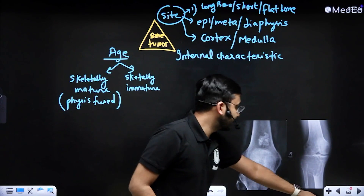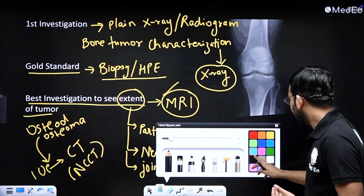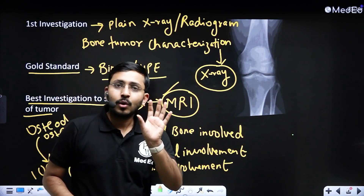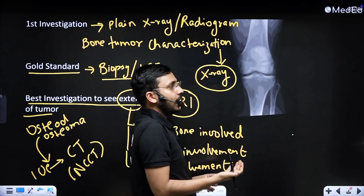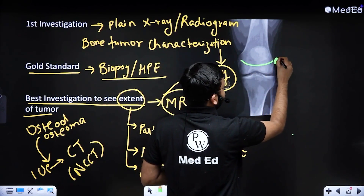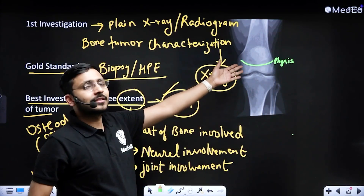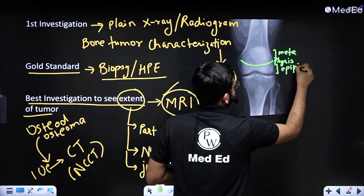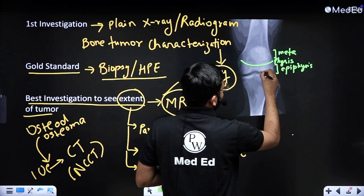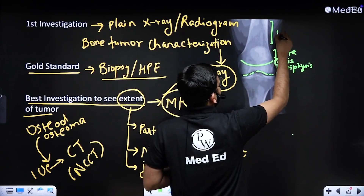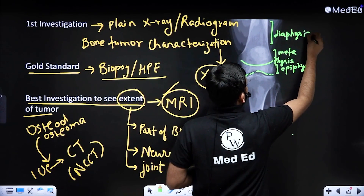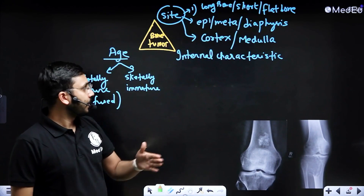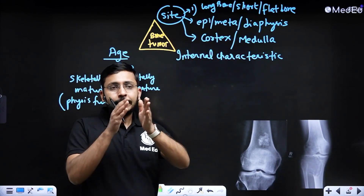Let's quickly recapitulate epiphysis, metaphysis, and diaphysis. These concepts apply to long bones like the femur, tibia, or fibula. In a skeletally mature patient with a closed physis: just above the physis is the metaphysis, just below the physis is the epiphysis — which is in contact with the joint capsule — and the shaft of the bone is the diaphysis. The epi-meta-diaphysis tells us the craniocaudal extent, while cortex versus medulla tells us the mediolateral extent of the tumor.